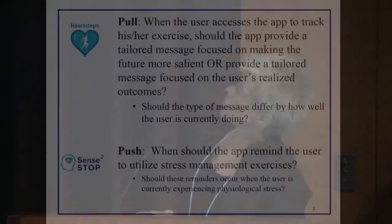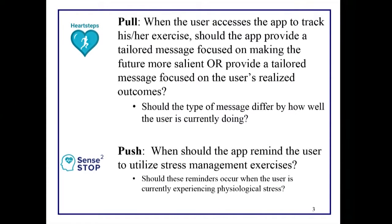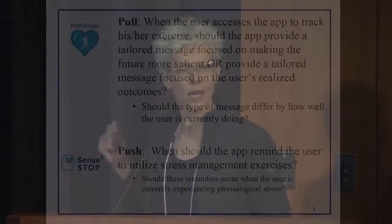HeartSteps is a set of three trials. The second trial is for people who've had a heart attack, and we're trying to help them in their recovery. They've gone through an intensive outpatient program, and we want to help them stay active. When the user goes to the phone to track their exercise, how do you present messages? One example focuses on the future — like living to see your children have children. Another acknowledges how far the user has come. When is it useful to provide one or the other, and does that differ by the individual's current context?